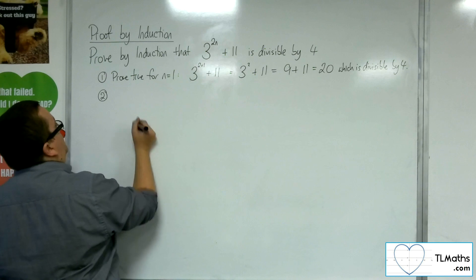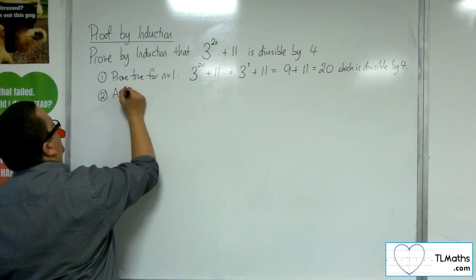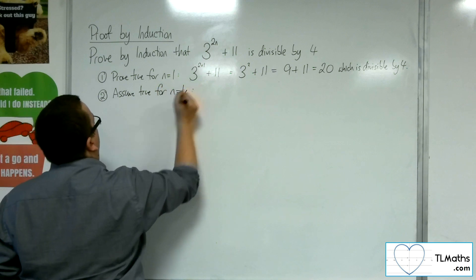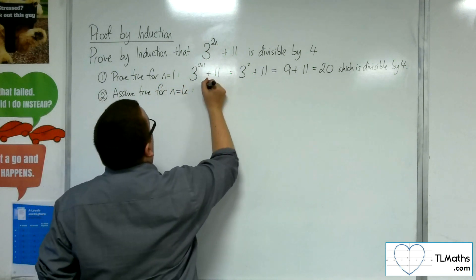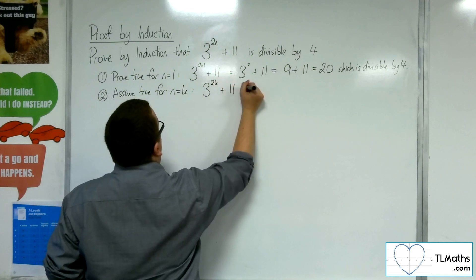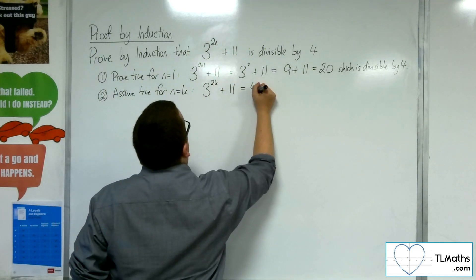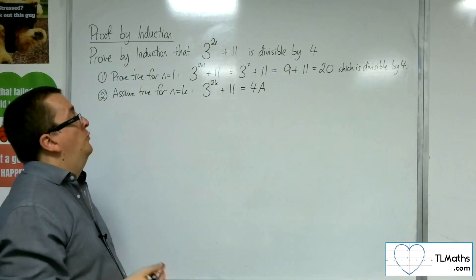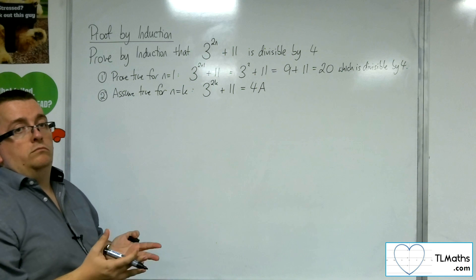Step 2, assume true for n equals k. So that means that I'm going to be able to write this as 3 to the 2k plus 11 is some multiple of 4.